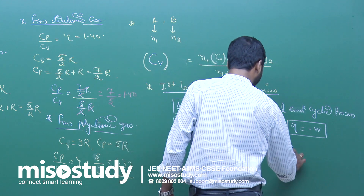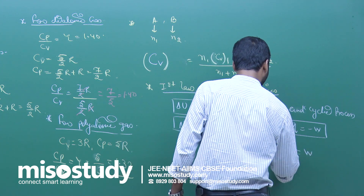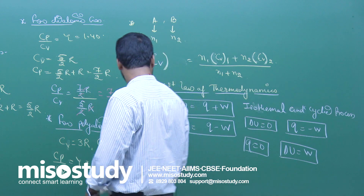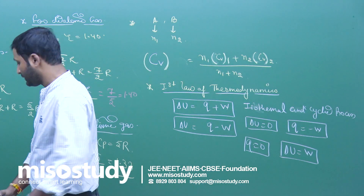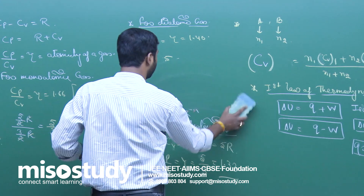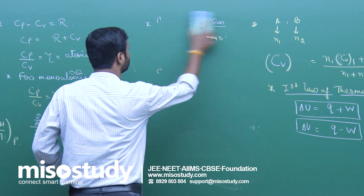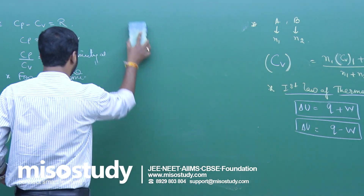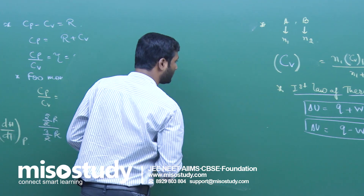In an adiabatic process, since q equals zero, we get delta U is equal to w. Now let us look at how to find the work done in isothermal and adiabatic processes.